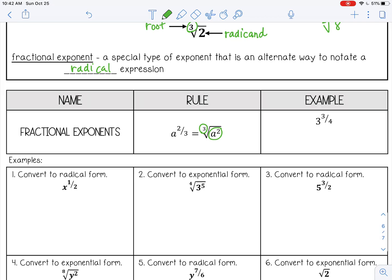So another example of 3 to the three-fourths power, I can rewrite that as the fourth root of 3 cubed. Now you can actually work that out, but for now let's just practice going back and forth between those two forms.